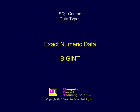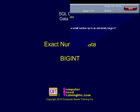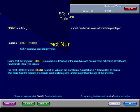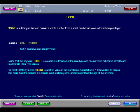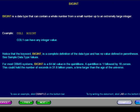Exact Numeric Data BigInt. BigInt is a data type that can contain a whole number from a small number up to an extremely large integer. Notice that the keyword BigInt is a complete definition of the data type and has no value defined in parentheses.